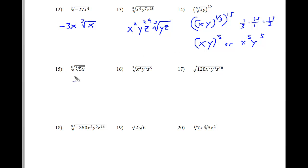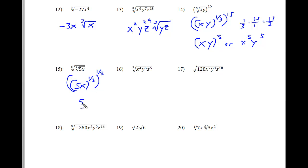Number 15 — you're going to put the first one into its fractional exponent, and then the fifth root is also going to go to a fractional exponent. Like the two in problem number 14, we're going to multiply these two fractions together: 1 times 1 is 1, and 3 times 5 is 15. So this is 5x raised to the 1/15th power, or the 15th root of 5x. These are equivalent answers.